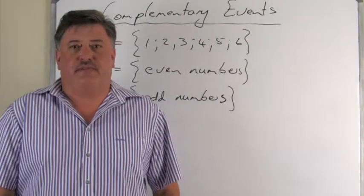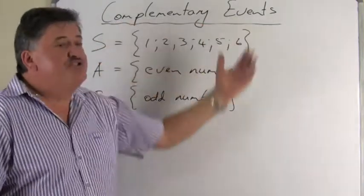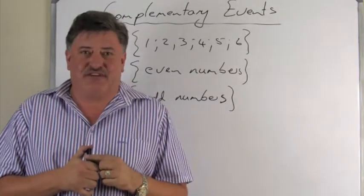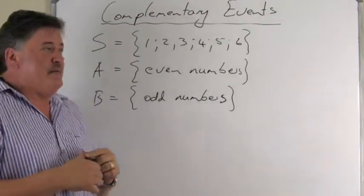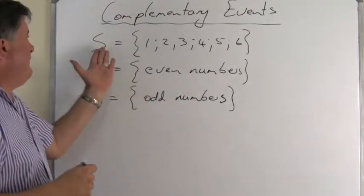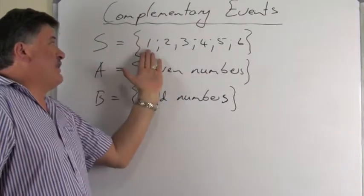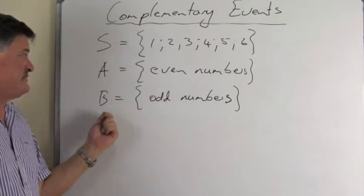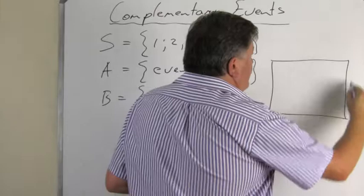Our next, the third and last special event is called complementary events. Before I define complementary events, let's quickly look at a problem where two events are complementary. We have a sample space when we roll a die with outcomes one, two, three, four, five, six. Event A is getting an even number, and event B is getting an odd number.